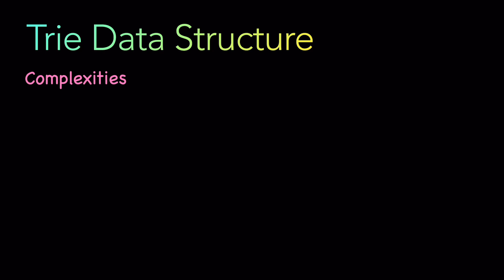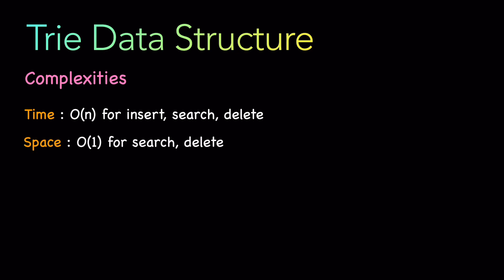Let's look at the complexities, which are important when doing prefix-based search or autocomplete features. The Trie is one of the best data structures in terms of search complexity. The time complexity is O(n) for insert, search, and delete, and the space complexity is O(1) because we are not using any auxiliary space for searching or deleting in the tree. Here n is the size of the string - for 'dad' n is 3, for 'boys' n is 4. That is the Trie data structure - a very important data structure.